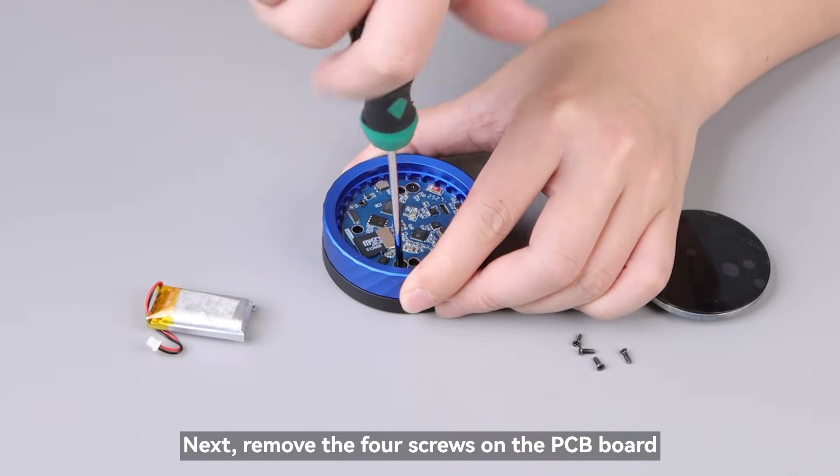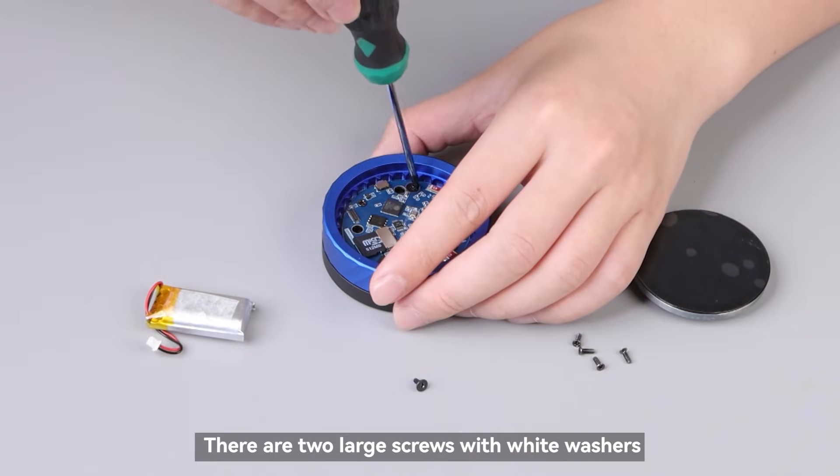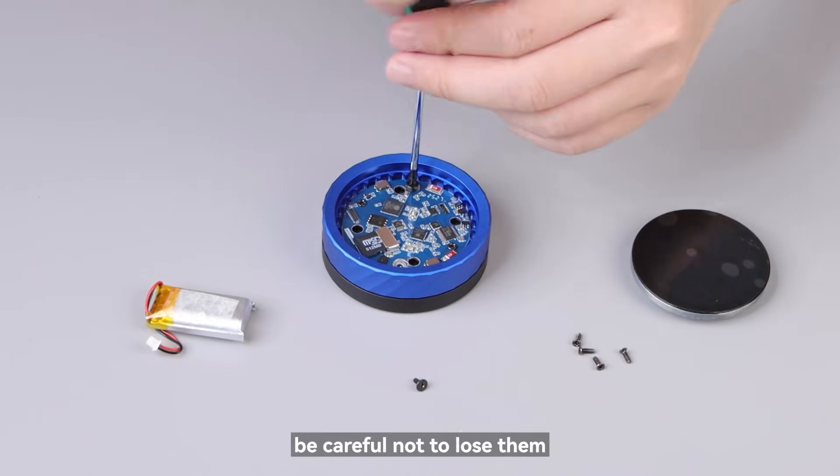Next, remove the four screws on the PCB board. There are two large screws with white washers. Be careful not to lose them.